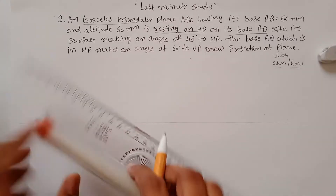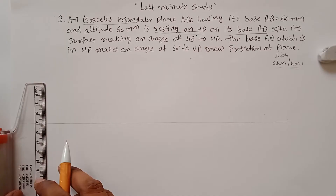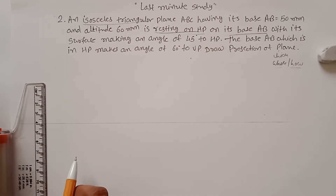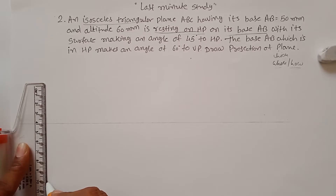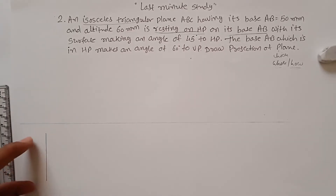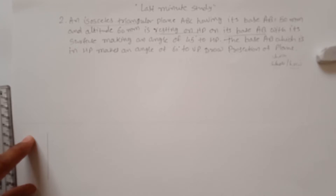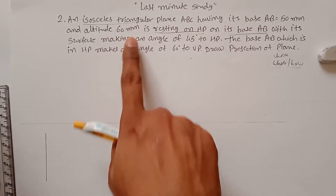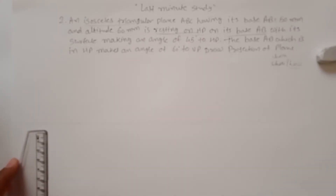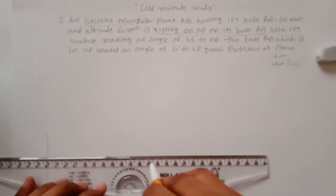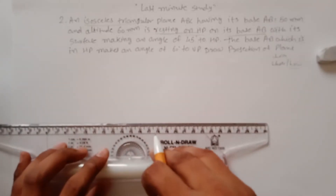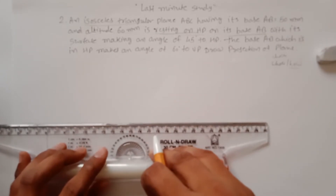First of all, draw the XY line with a thin line. Then draw a perpendicular vertical line to draw the top view of the isosceles triangle. The base distance is 50 mm, so it's 5 centimeters. The plane is resting with its base AB on the HP. For the altitude of 60 mm, find the midpoint and measure 60 mm from it.